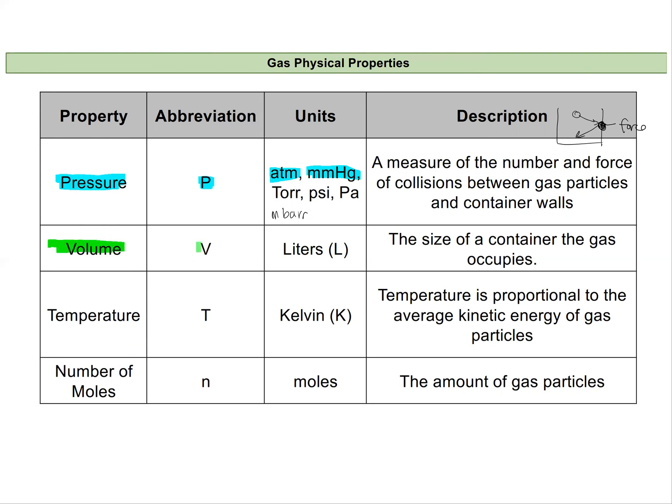Then we have volume of a gas, which we abbreviate capital V, and we'll keep this in units of liters. So if you see it in milliliters, please change it to liters. And we'll do that with one of our metric conversions, that 1,000 milliliters equals one liter. And this really talks about the size of whatever the container is the gas is in. Similar to how we measure the volume of a liquid, we can measure the volume of a gas by knowing the amount of space inside of a container.